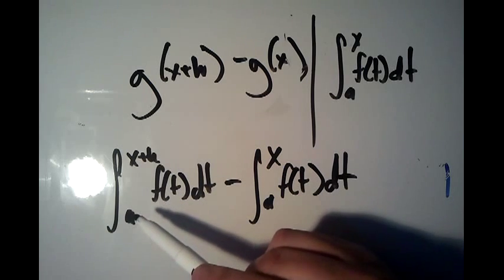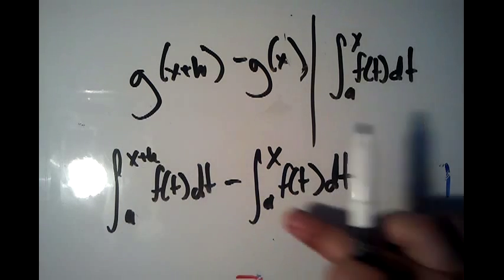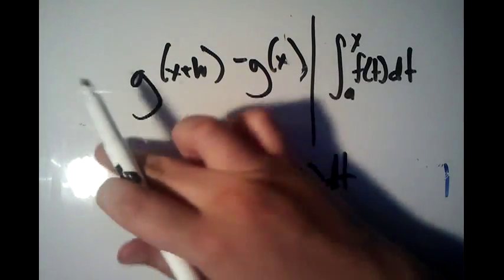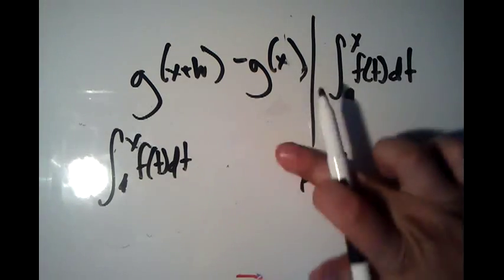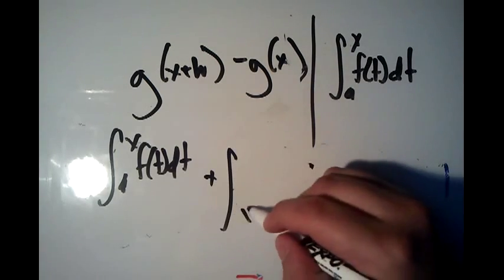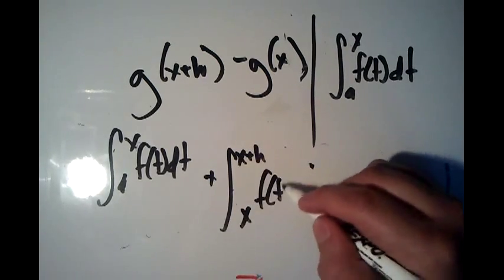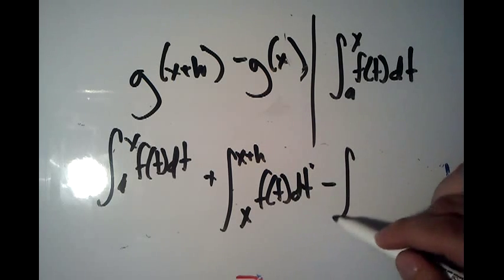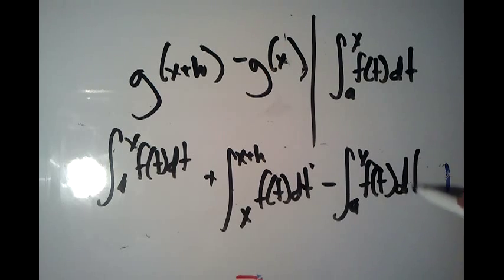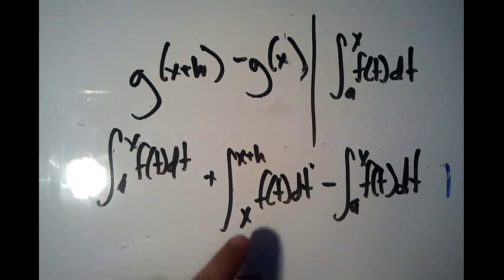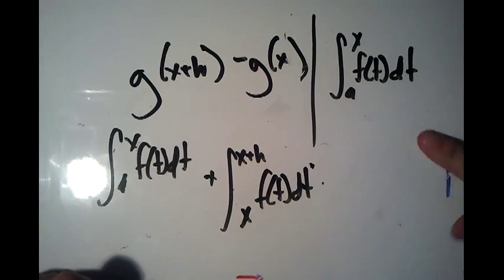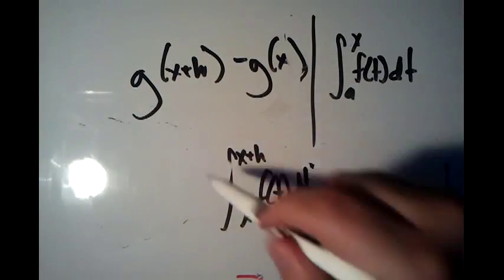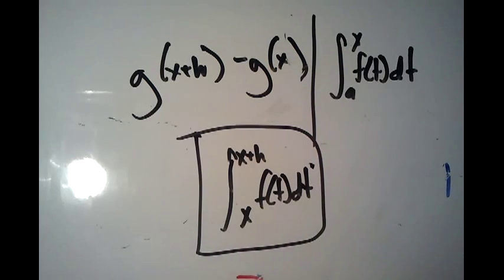Using the law of integrals, we're going to break up this integral from a to x plus h into the integral from a to x and from x to x plus h. So we replace it with the integral from a to x of f of t dt, plus the integral from x to x plus h of f of t dt, and then subtract the integral from a to x of f of t dt. Those two a-to-x terms cancel, and we get that g of x plus h minus g of x equals the integral from x to x plus h of f of t dt.